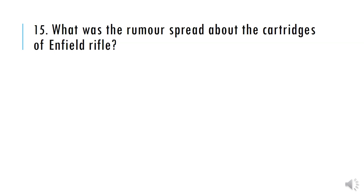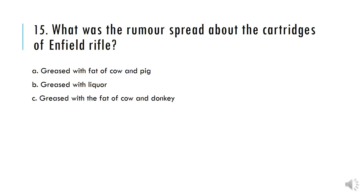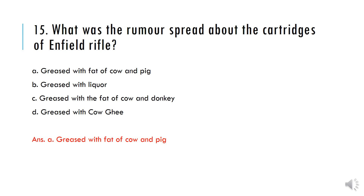What was the rumour spread about the cartridges of the Enfield Rifle? A) Greased with fat of cow and pig, B) Greased with liquor, C) Greased with fat of cow and donkey, D) Greased with cow ghee. And the correct answer is Option A — Greased with fat of cow and pig.